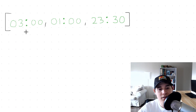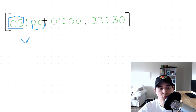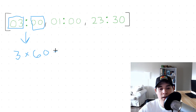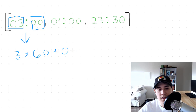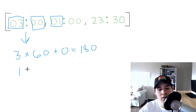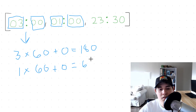Let's take a look at 3 o'clock. The first part would be our hours, the second part our minutes. To convert this to minutes, we do 3 times 60 because there are 60 minutes in an hour, then add 0, which equals 180 minutes. For 1 o'clock, we take 1 times 60 plus 0 minutes, which equals 60 minutes.